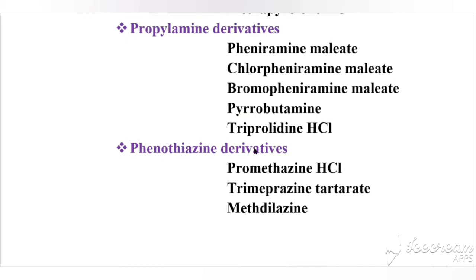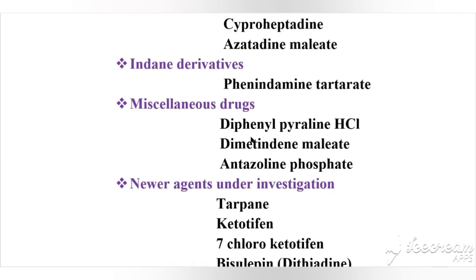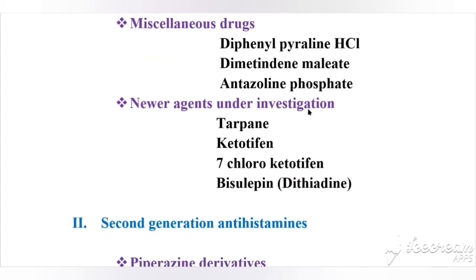The fourth subtype is phenothiazine derivatives, otherwise called tricyclic ring systems, with examples promethazine hydrochloride, trimeprazine tartrate, and methdilazine. The fifth is piperazine derivatives, otherwise called cyclic basic chain analogues, with examples cyclizine hydrochloride, chlorcyclizine hydrochloride, meclizine hydrochloride, and buclizine hydrochloride. The sixth is dibenzocycloheptenes, with examples cyproheptadine and azatadine maleate. The seventh is indane derivatives, with the example phenindamine tartrate. The eighth is miscellaneous drugs: diphenylpyraline hydrochloride, dimethindene maleate, and antazoline phosphate. The ninth subtype is newer agents under investigation, including terfenadine, ketotifen, and 7-chloroketotifen.